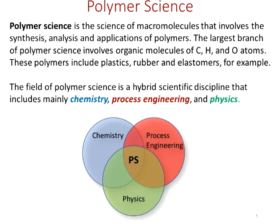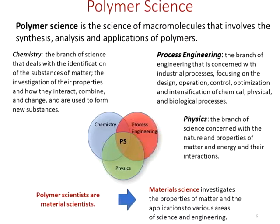Let's take a look at these three branches of science individually. Chemistry is a branch of science that deals with the identification of substances of matter — how do we identify this matter? It deals with the investigation of their properties, how they interact, how they combine, how they're changed, and how they're used to form new substances. That's how we think about chemistry when we look at polymer science.